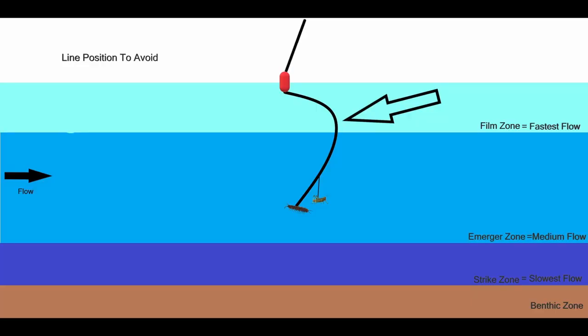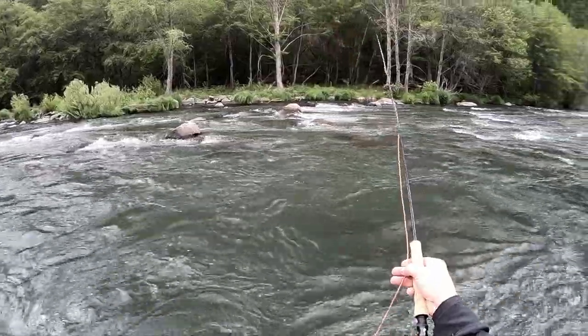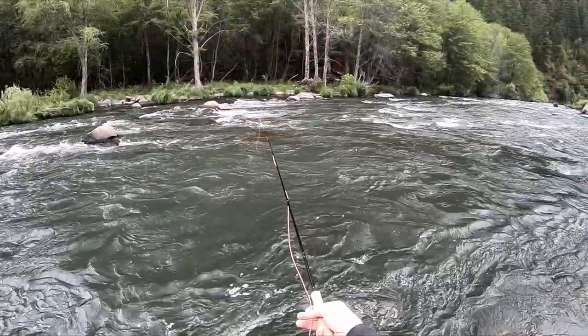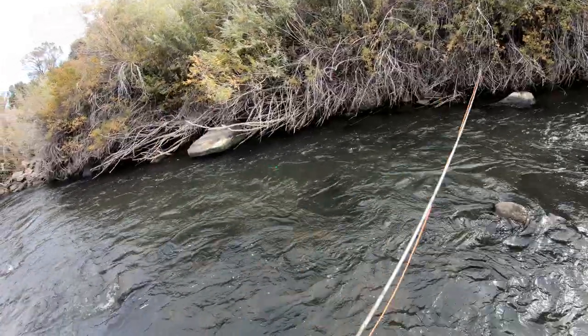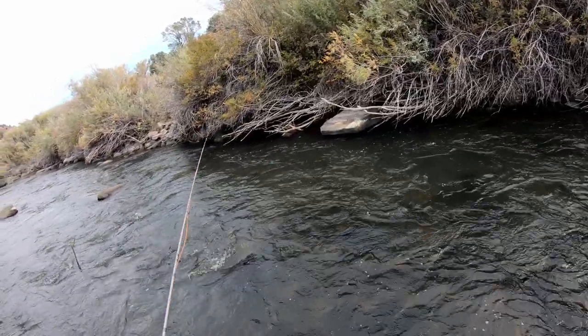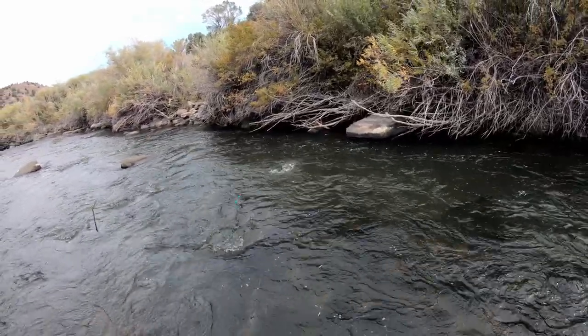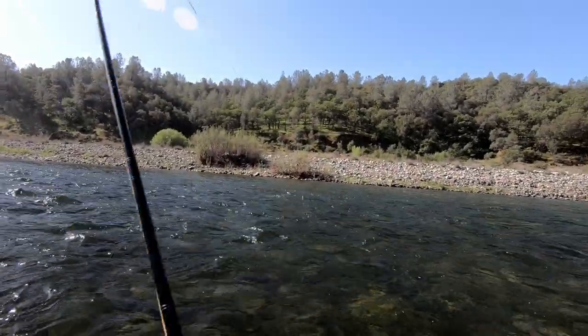Checking the indicator will help avoid improper drifts. Complex currents could make the line below the indicator do all sorts of mysterious drifts. These bad drifts will make strikes undetectable. So, checking the indicator will help prevent bad drifts from happening, increasing strike detection. In addition, sometimes while checking the indicator, a fly fisher will be surprised by the tug of a fish at the end of their line.